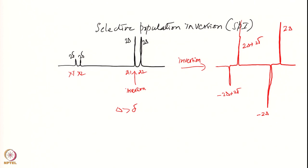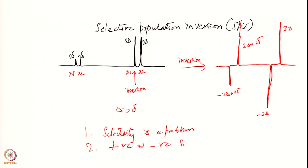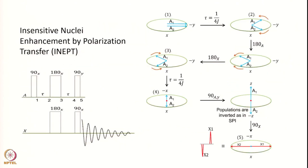However, we had the problem that we have positive-negative signals and selectivity is quite an issue — applying a selective pulse was an issue. Therefore we had some difficulties: selectivity is a problem and we cannot do it in crowded spectra. We also have the positive-negative signals. So in order to get over this problem, a new technique came up which is called INEPT — Insensitive Nuclei Enhancement by Polarization Transfer.